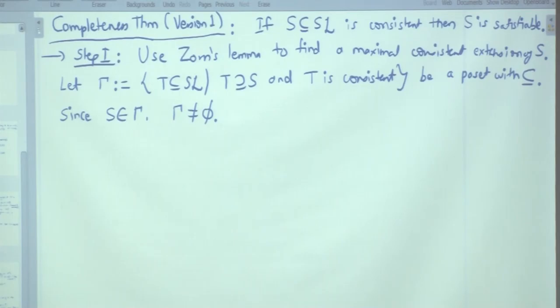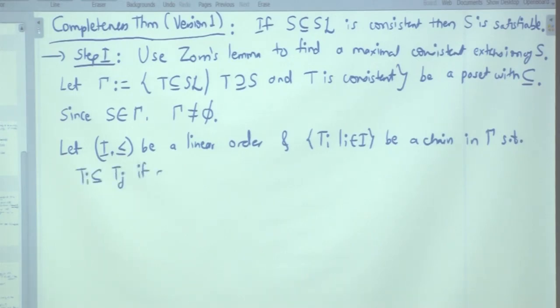First tick. What is the second property that we need to verify? Every chain has an upper bound. So let (I, ≤) be a linear order and {T_i : i ∈ I} be a chain in Γ such that T_i is contained inside T_j if and only if i ≤ j. So actually it is ordered by capital I.